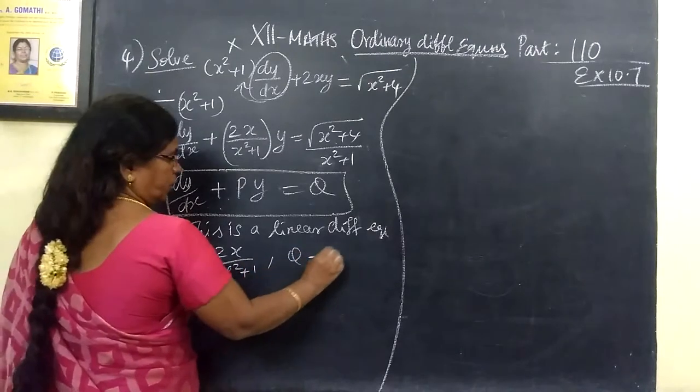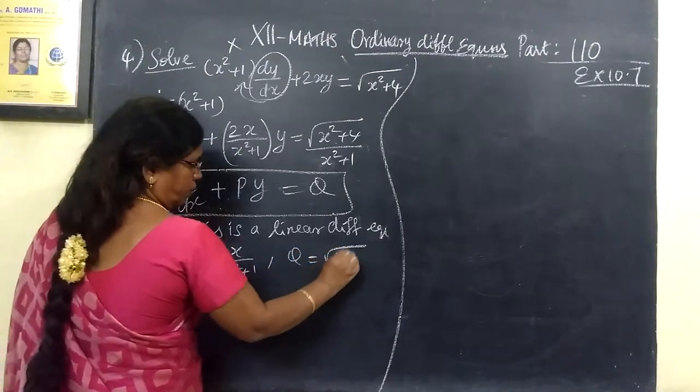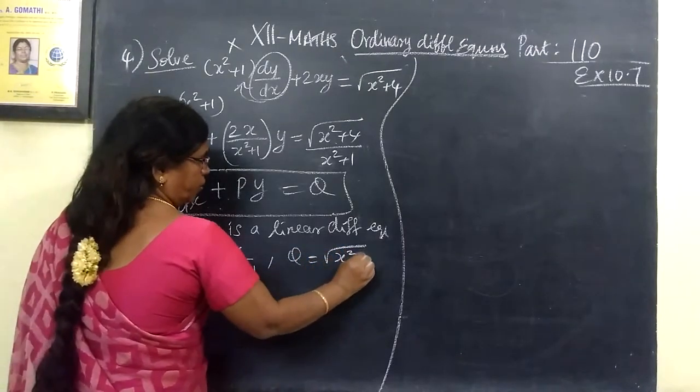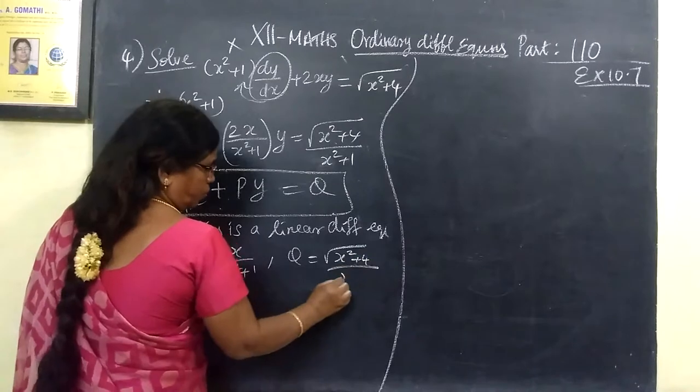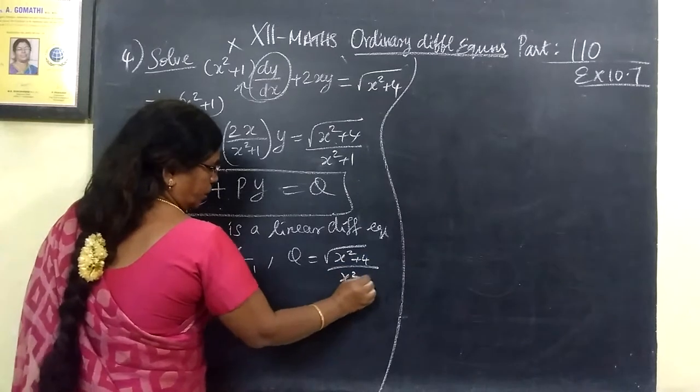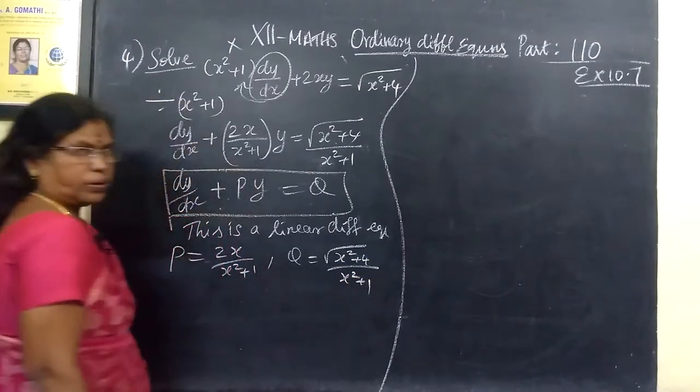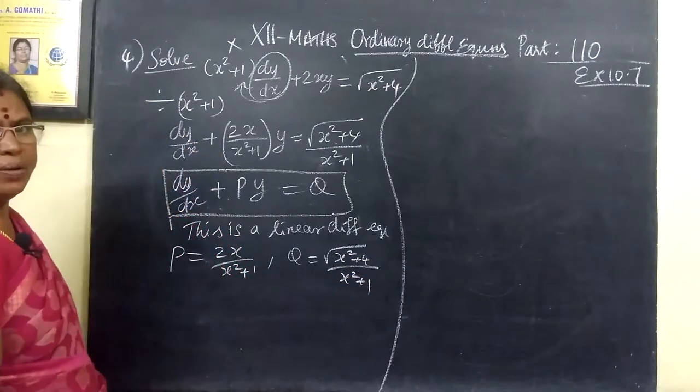P equal to 2x by x squared plus 1. Q equal to root of x squared plus 4 by x squared plus 1.